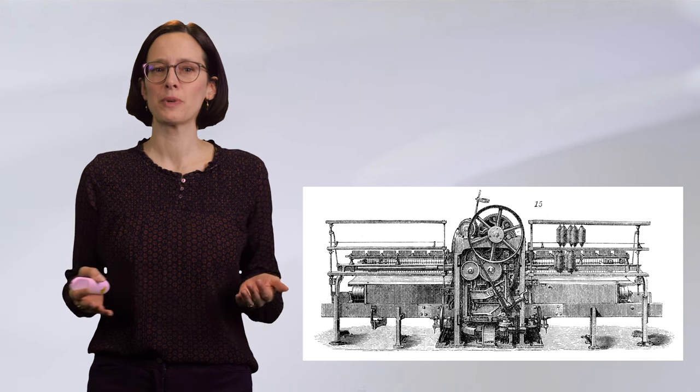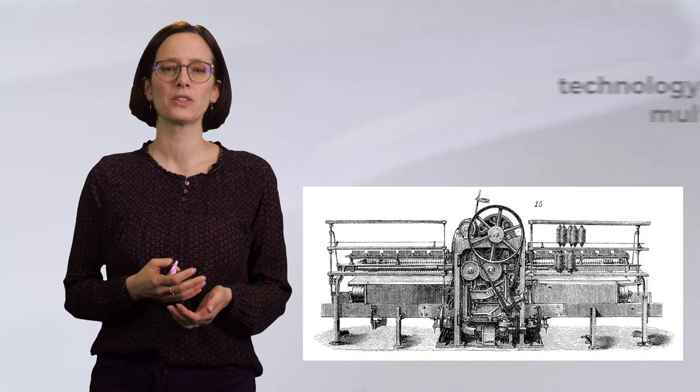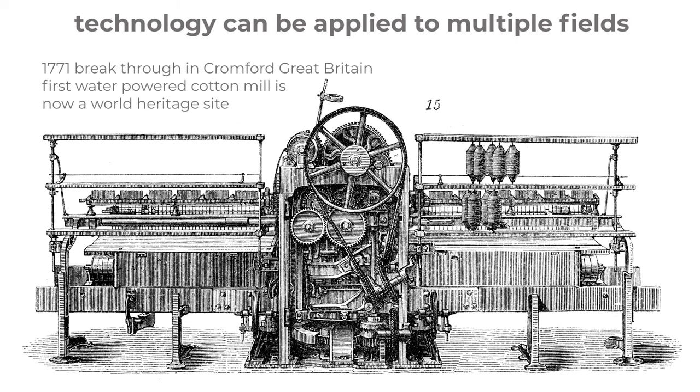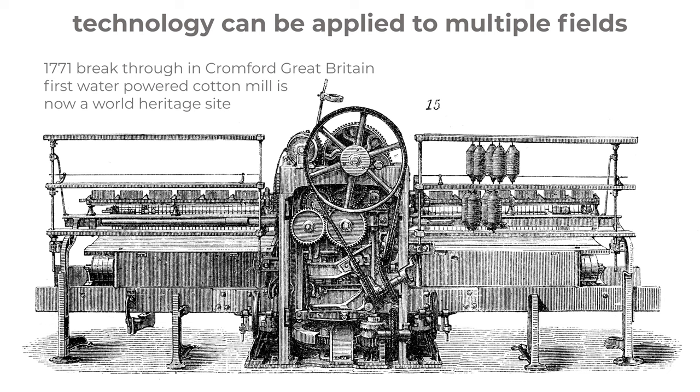The continuous manufacturing approach can be applied to multiple fields. For example, there was a technological breakthrough in 1771 in Comfort, Great Britain, where the first water-powered cotton mill was installed. This mill practically started the Industrial Revolution because continuous manufacturing allowed to produce a lot of product in a very fast and very efficient way.